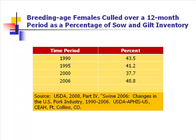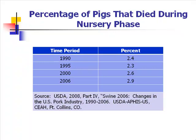This is the breeding-age females culled over a 12-month period as a percentage of sow and gilt inventory. These studies have been done every five years through NAOMS. In 1990 it was 43%, 41%, in 2000 it was 37%, 38% — so we were actually reducing the culling rate in the swine herd. Look what happened in 2006: up to 48, almost 50% culling level. This is a nationwide survey. Part of it I think is that the industry is moving to larger and larger operations, and larger operations tend to cull at a higher rate than medium to smaller types.